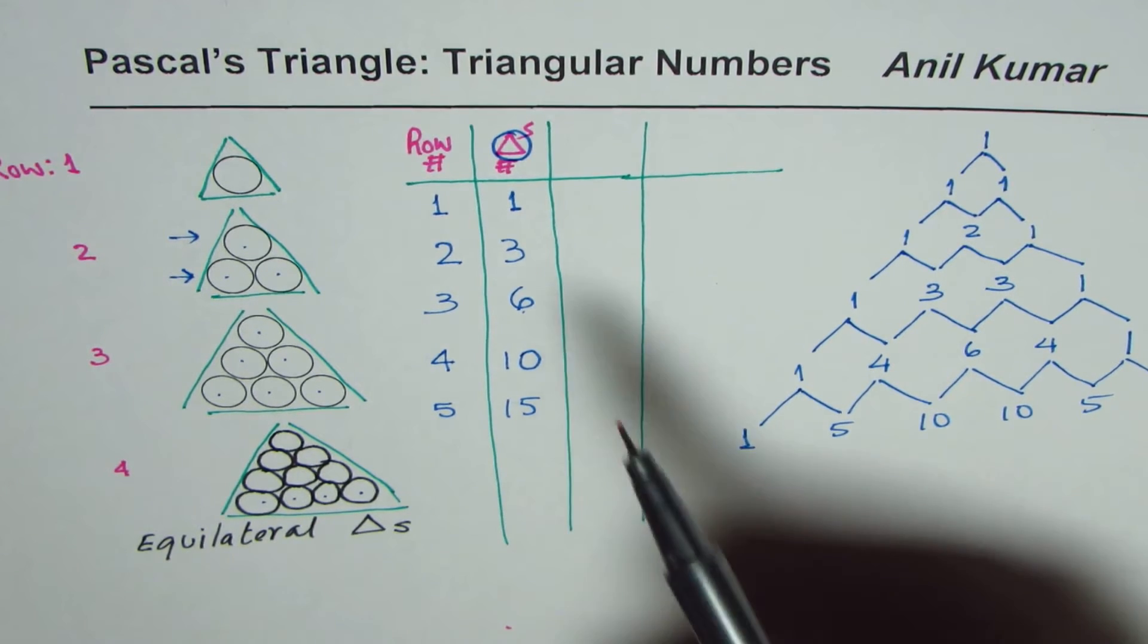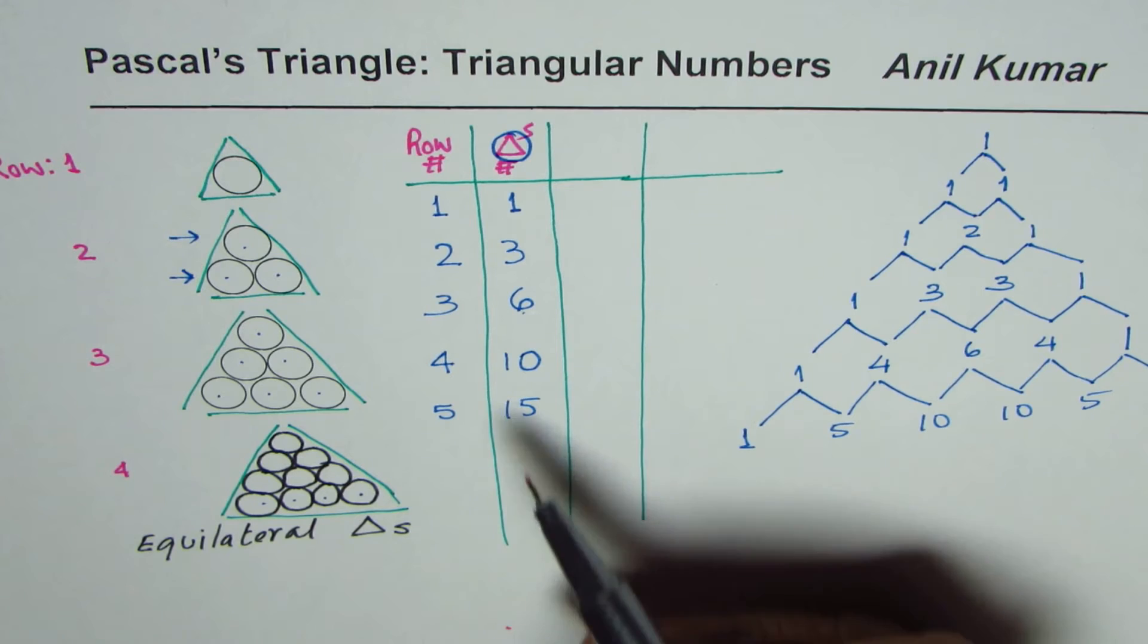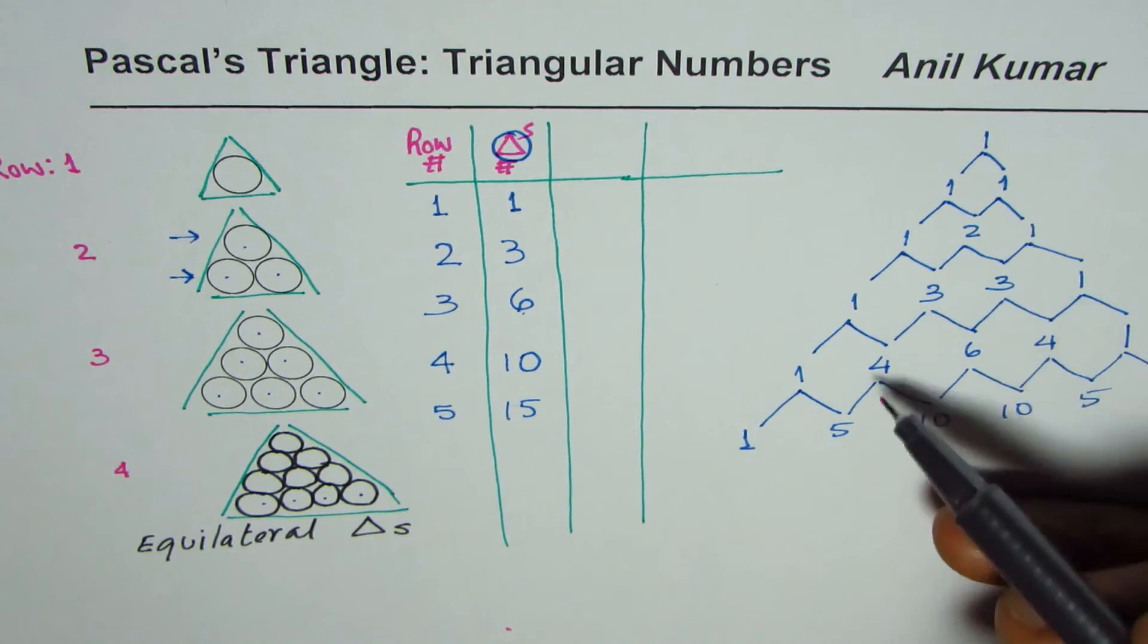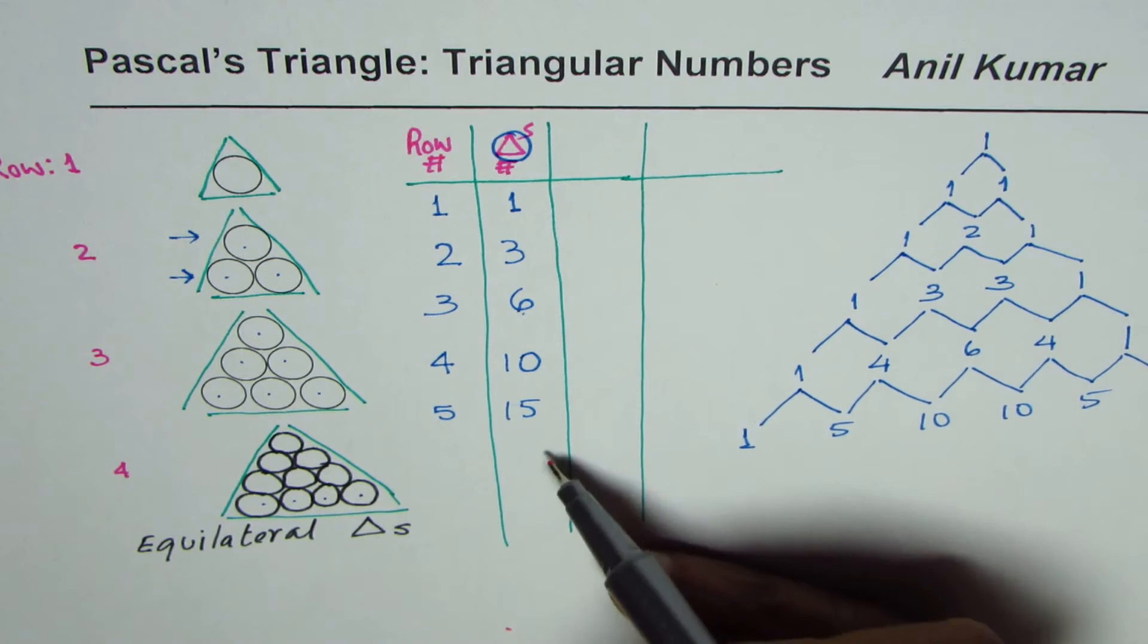Now, what we are getting here is numbers like one, three, six, ten, and fifteen. Let's see these diagonals. One, three, six, ten, and fifteen.